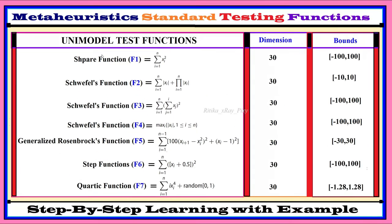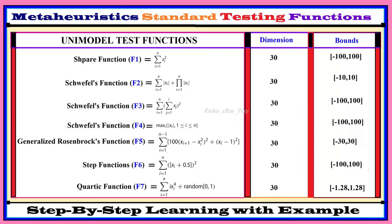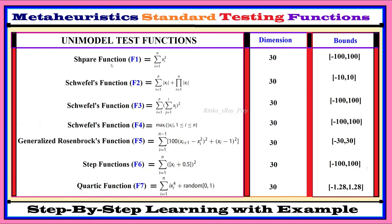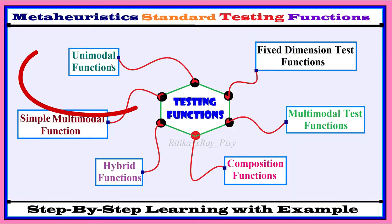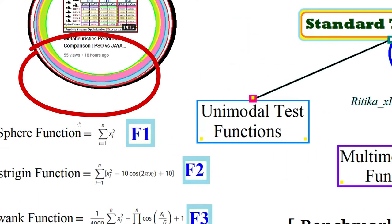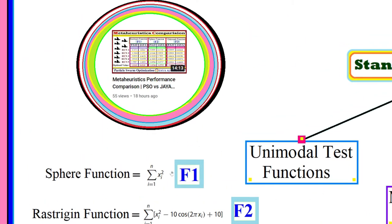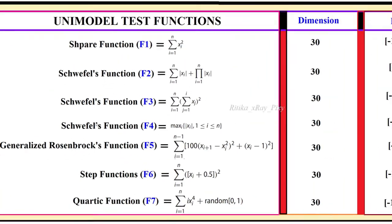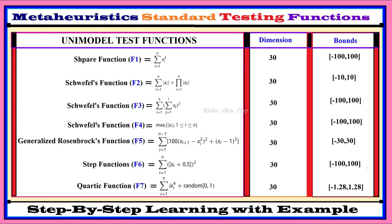First, we have unimodal test functions. Unimodal test functions are used to check algorithm convergence property and exploitation capability. The fitness curve in the unimodal test function is used to check the algorithm convergence speed. In this video, we used only one unimodal test function, F1. Here you can see different types of unimodal test functions that we can use for testing.